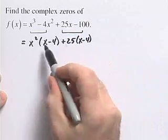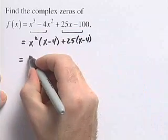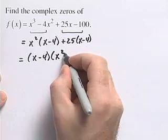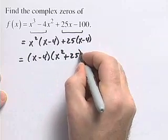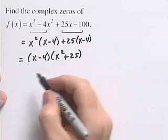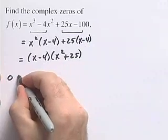Now my two terms have a common factor of x minus 4, which I can pull out. So I get x minus 4 times x squared plus 25. We want to find all the complex zeros for this, so we could set this function equal to zero and solve.